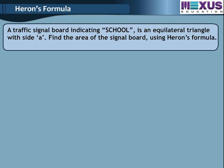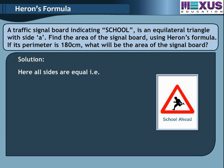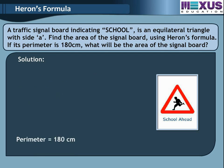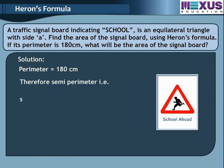A traffic signal board indicating a school is an equilateral triangle with side A. Find the area of the signal board using Heron's formula. If its perimeter is 180 cm, what will be the area of the signal board? Solution: All sides are equal, so A equals B equals C. Step 1: S equals (A plus B plus C) divided by 2, equals 3A divided by 2. Given perimeter equals 180 cm, therefore S equals 180 divided by 2, equals 90 cm.